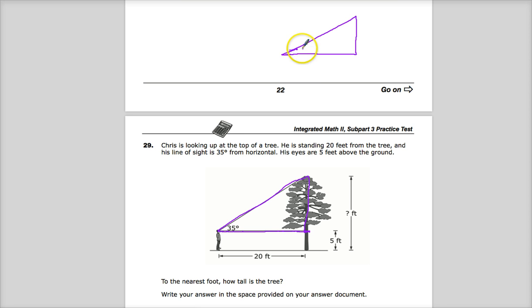What do I know about it? I know that this angle is 35 degrees, and I know that this is 20 feet. And it's a right triangle because this is horizontal and the tree is considered to be vertical.